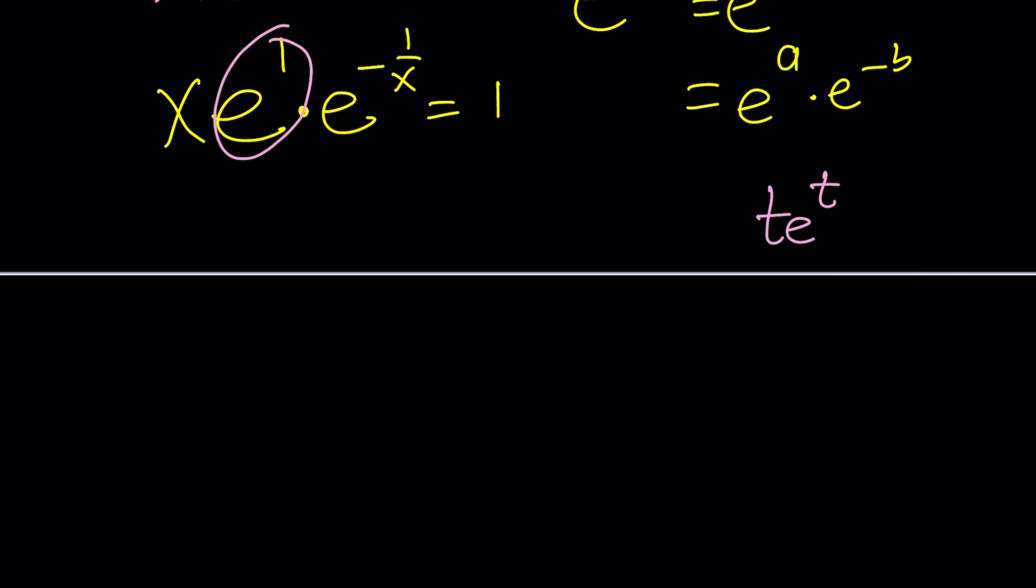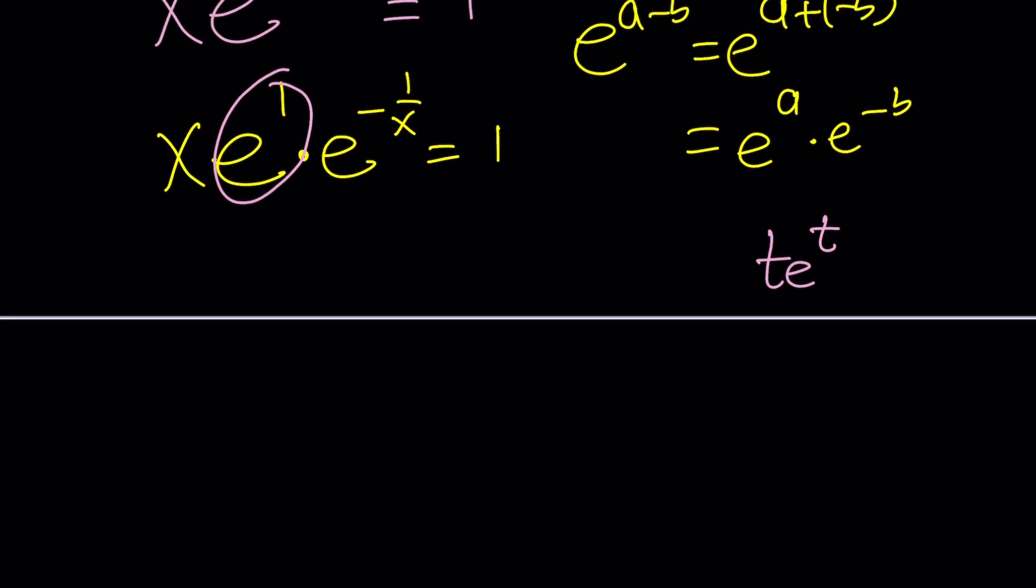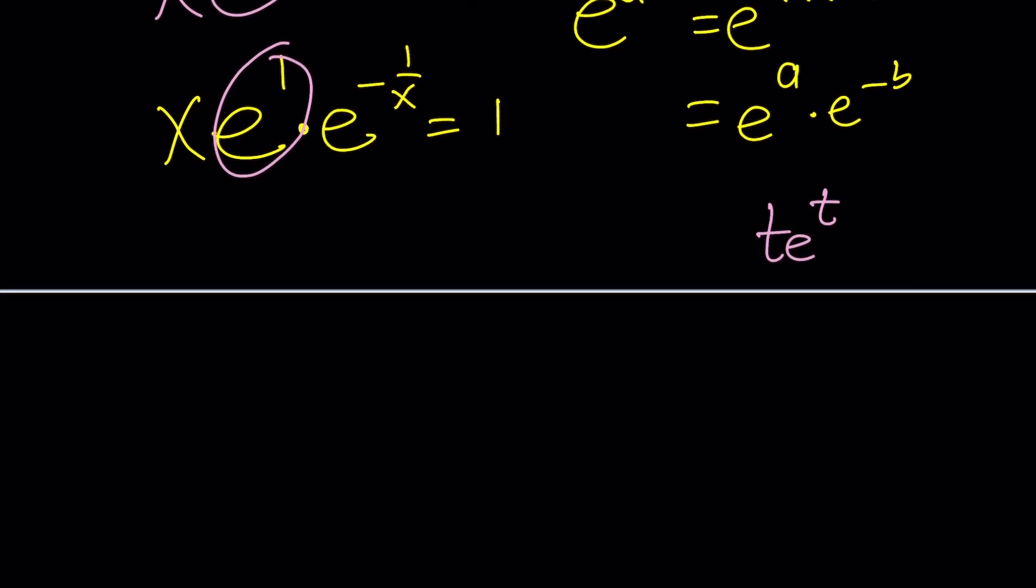Instead, let's go ahead and put the x and e to the negative 1 over x on the other side. Okay? You've got to be careful what you press with no ability because it can just go crazy all over the place. So let's go ahead and multiply both sides by this first. Okay? That'll eliminate the e. And then multiply by 1 over x. And that'll eliminate the x.